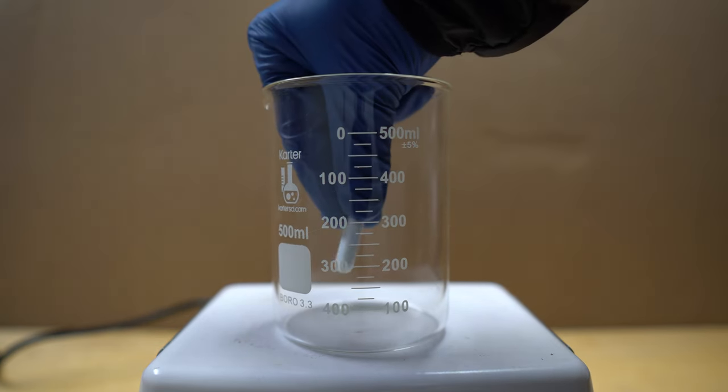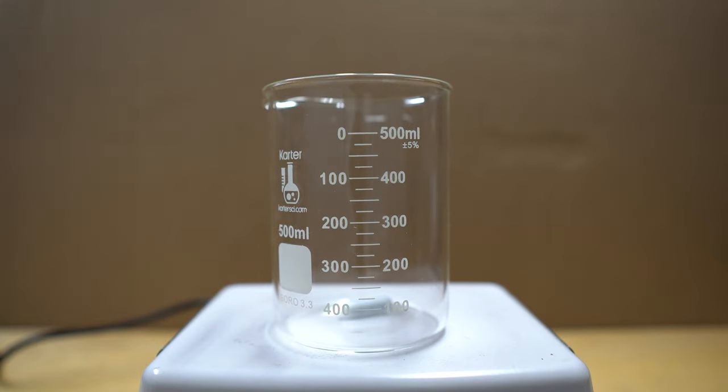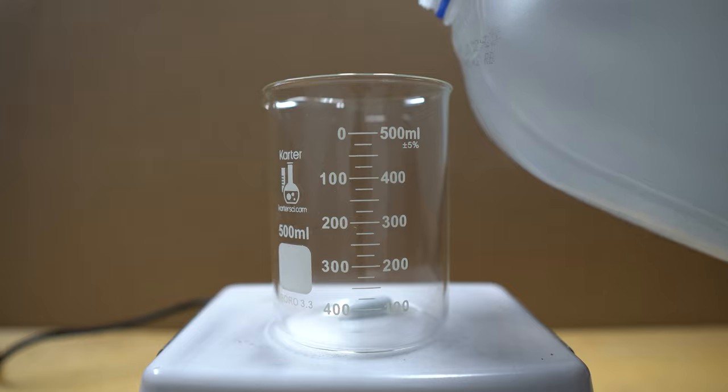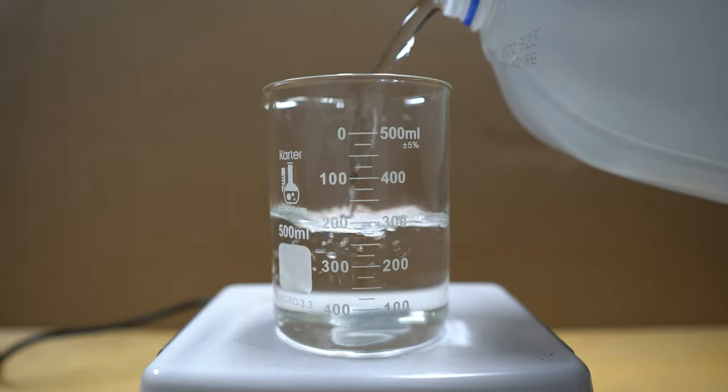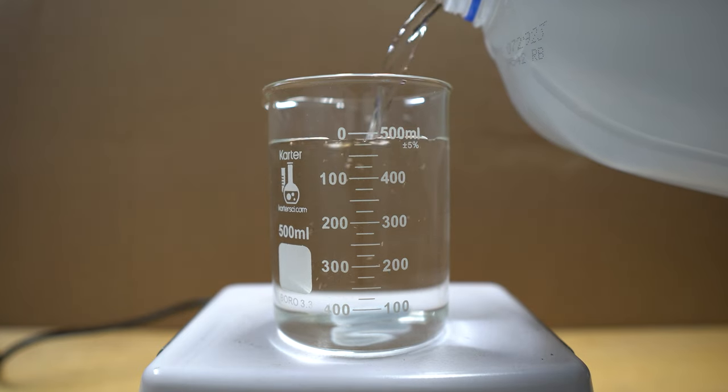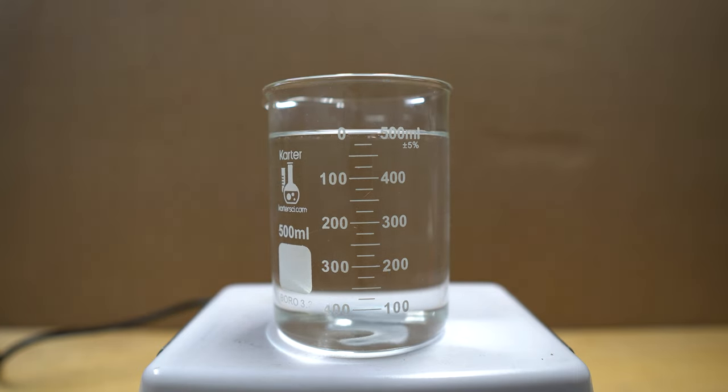So first thing that we're going to do is we're going to drop a stir bar in, and then we're going to add 500ml of water. So once everything was filled, I turned on the stirring and then I added the sodium hydroxide.